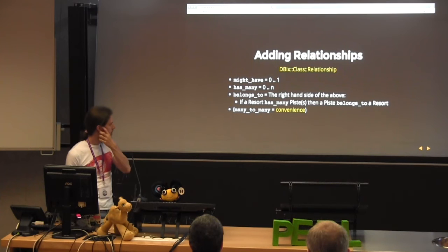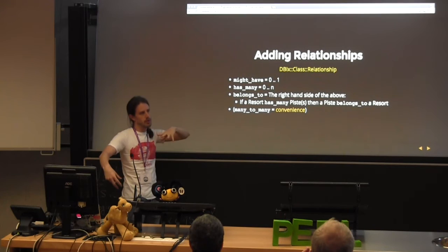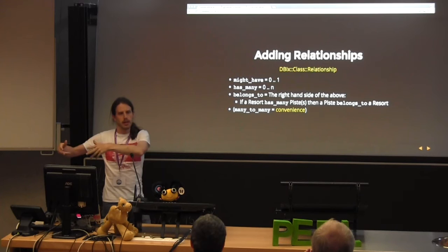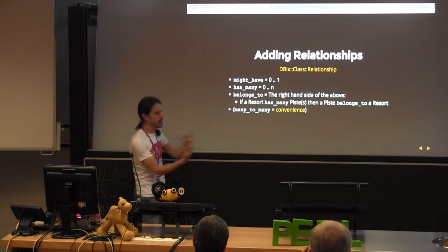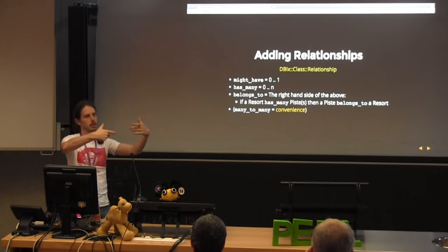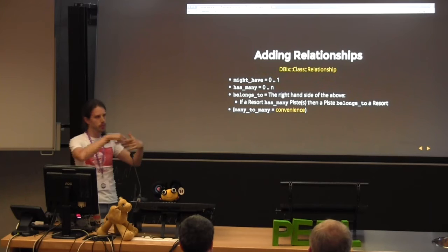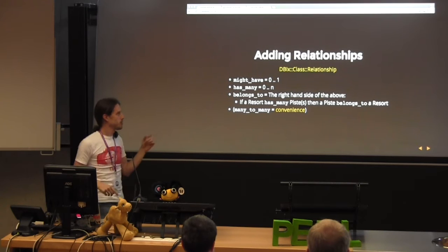DBIx::Class supports different kinds of relationships. When you define a schema, a table only ever belongs to another table — foreign key through references. DBIx::Class gives us convenience methods so we can do it the other way around, and it has a many-to-many convenience method so you can jump through linking tables. However, that's generally discouraged unless your data is correctly normalised, because people will add metadata to the linking table and then realise they can't get to it through the many-to-many.